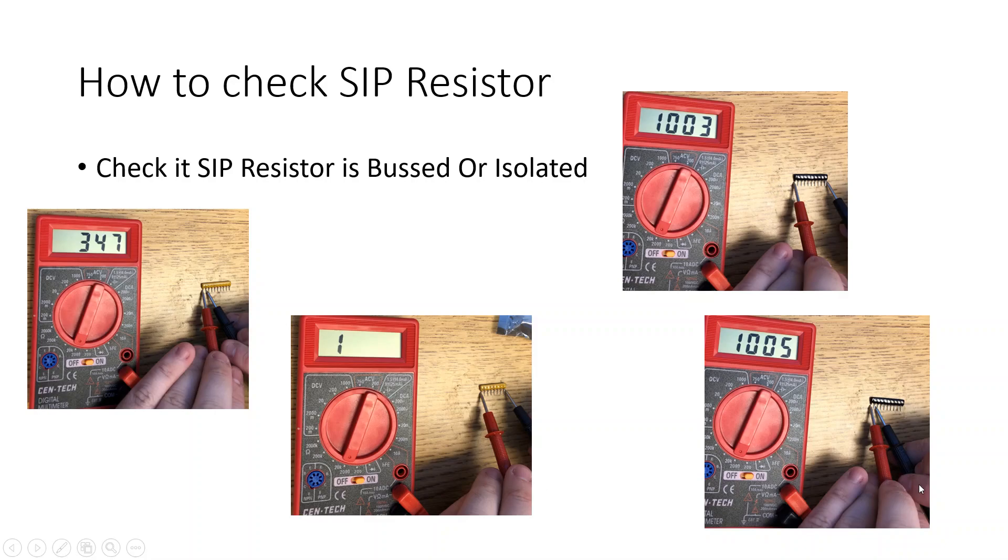Here I test the same thing against a different SIP resistor pack, and as you can see, I have roughly the same resistance across the adjacent pin and the opposite pin on the other side. It's important to note that whatever one you have is probably fine. The bussed is going to be easier when we wire this circuit up. If you do have an isolated, just simply treat it as wiring an individual resistor as you've done in the previous lab.